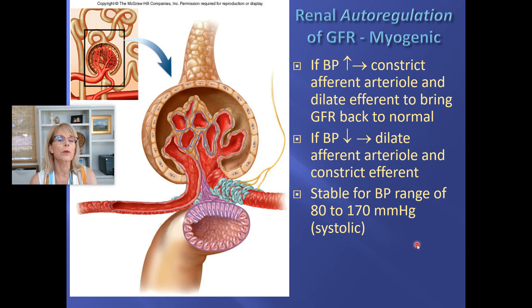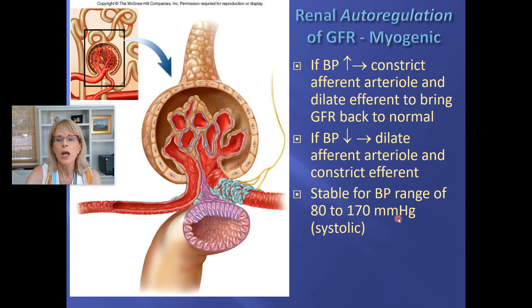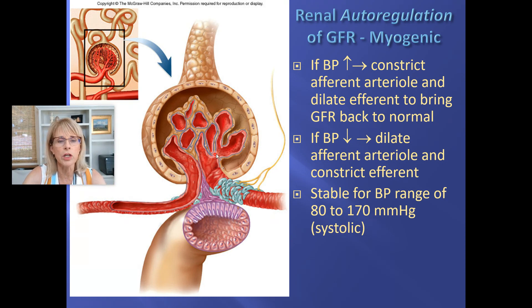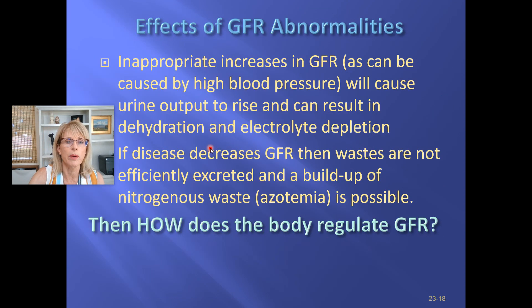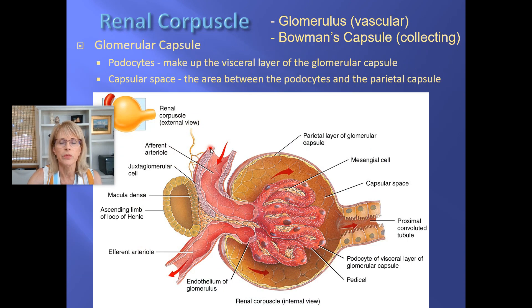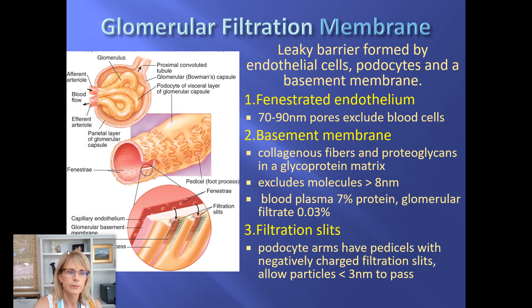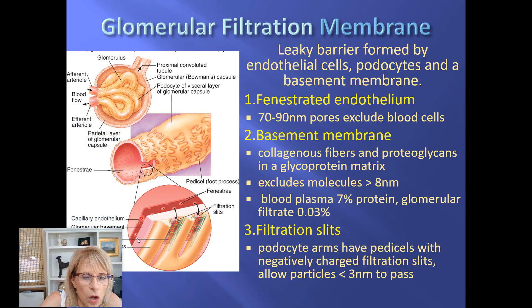When blood pressure goes above 170 mmHg systolic — which is actually quite common — this system also cannot compensate. People with high blood pressure don't usually end up hospitalized for making too much urine. The bigger problem is that when systolic pressure exceeds 170, the pressure inside the glomerulus gets too high, and at 180 or 190, it will start to rupture or damage that capillary bed. Let's look at the filtration membrane to understand what that means.